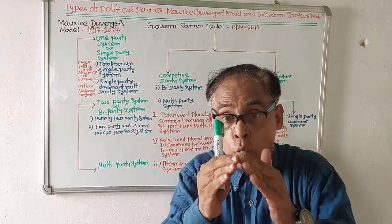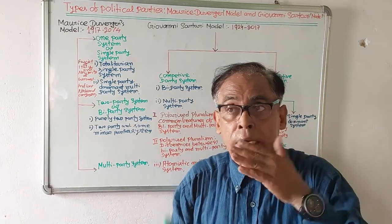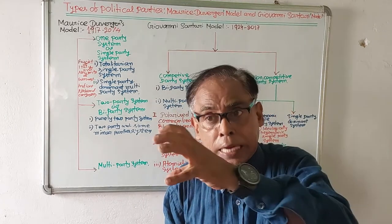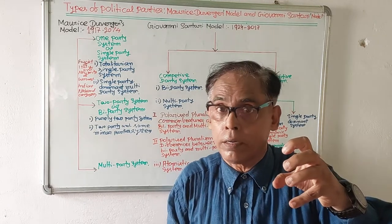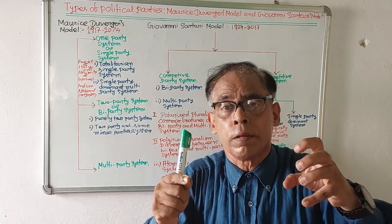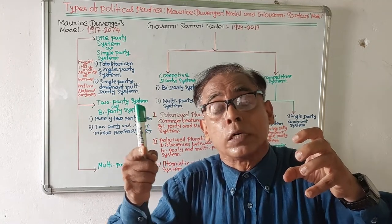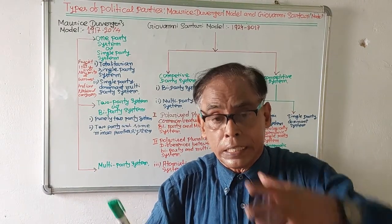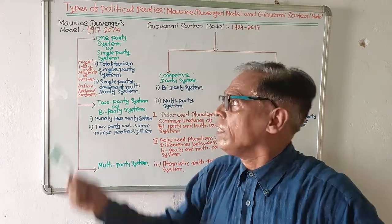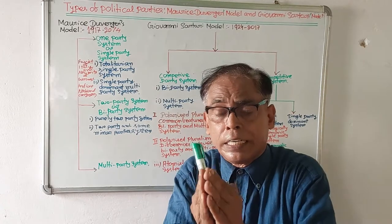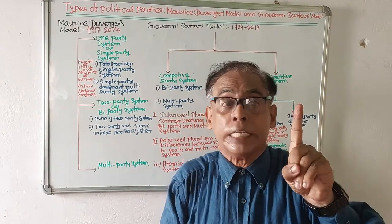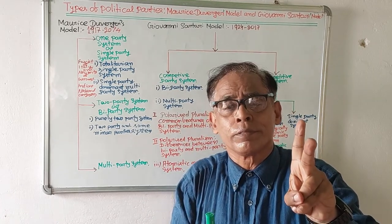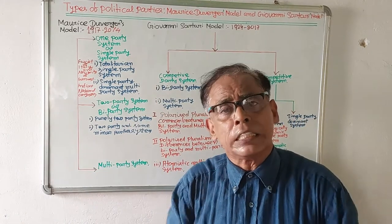In a single party system, in the entire country only one political party controls and exercises power. This party allows no other opposition groups. If any opposition group is observed, it is suppressed with a strong hand. So a single party system is one where only one political party is found, it is very powerful, it exercises and controls power, and it suppresses opposition.